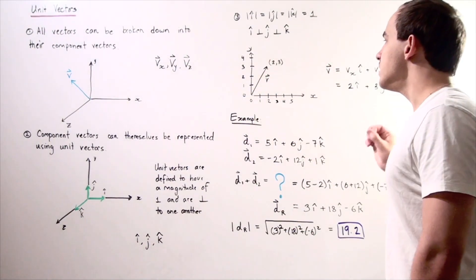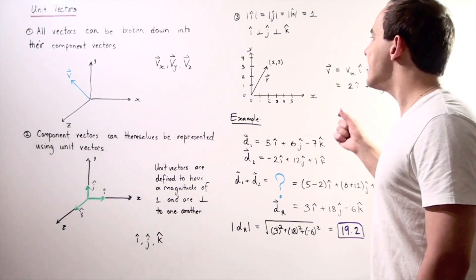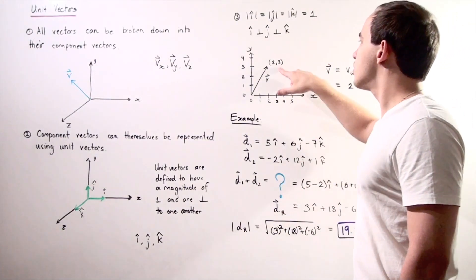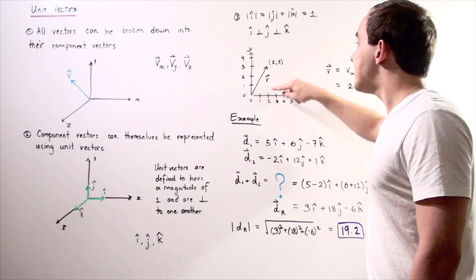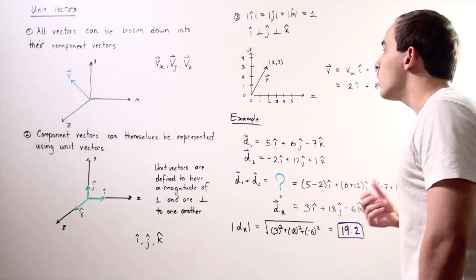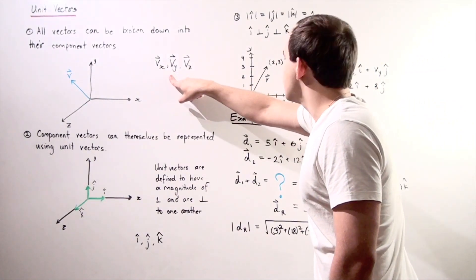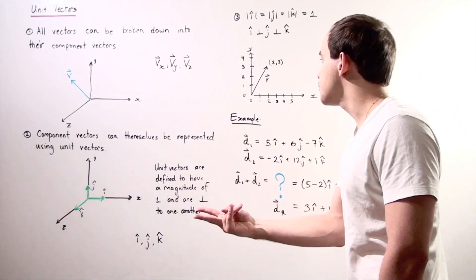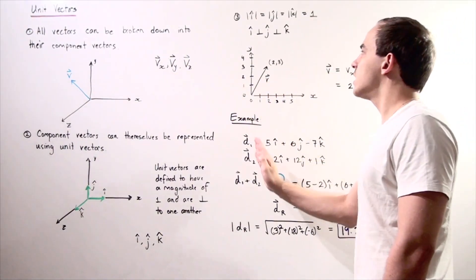Let's look at the following diagram. Suppose we have a two-dimensional vector v, which begins at the origin and ends at the point (2, 3), so our x-coordinate is 2 and our y-coordinate is 3. We want to figure out how we can represent our vector v using its component vectors. Because this is a two-dimensional plane, we can break this down into two component vectors: Vx, which points along the x-axis, and Vy, which points along the y-axis.